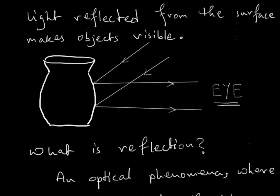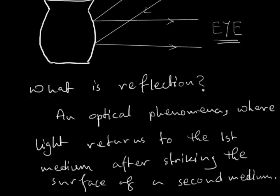In the above case, the atmosphere is the first medium and the surface of the object is the second medium. When light falls on the surface from the first medium, due to the reflection phenomenon it returns to the first medium. This phenomenon is known as reflection — an optical phenomenon by which light returns to the first medium after striking the second medium.